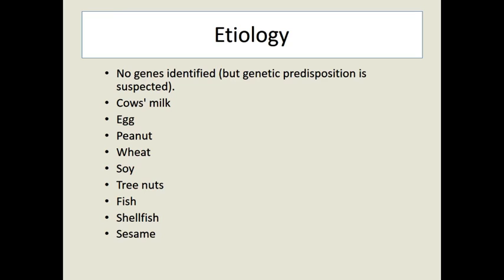Environmental factors include the hygiene hypothesis — overstimulation of Th2 response due to lack of Th1 stimulation — reduction in dietary antioxidants, and excess or deficiency of vitamin D. Vitamin D is a lipid-soluble vitamin that accumulates in the liver and fat tissue, so overdosing is as dangerous as deficiency. Protective factors include omega-3 polyunsaturated fatty acids, which studies show are inversely related to asthma and allergies, though caution is needed for patients allergic to shellfish or fish.